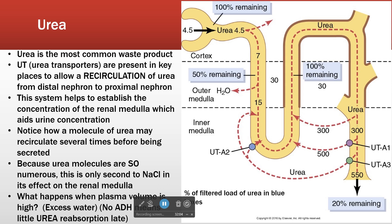When ADH is present, we have urea transporters that are open. As the urea passes through the concentrated medulla, some of the urea actually goes from the collecting ducts toward the interstitium around the nephron loop — it adds to the osmolar gradient. Counter-current multiplication is stacking up the sodium concentration, and urea recirculation adds to that.